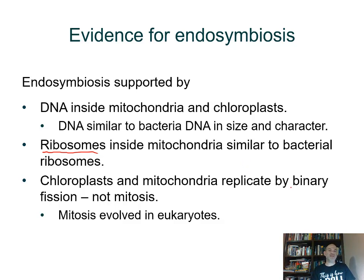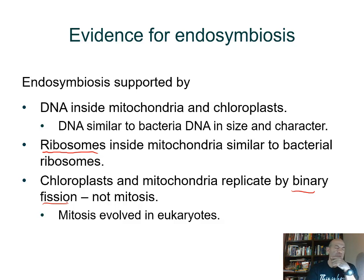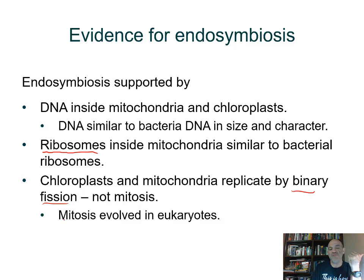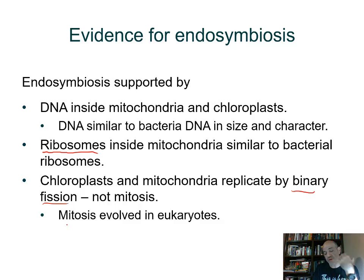They replicate by binary fission just as we see bacteria do today. When we look at how eukaryotes divide and make copies of themselves, they need a new method of division that allows dividing the nucleus — which is more complex than in prokaryotes. There's more genetic material and linear chromosomes instead of circular ones. The process that evolved is called mitosis.